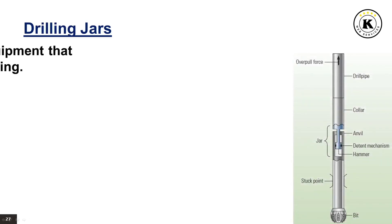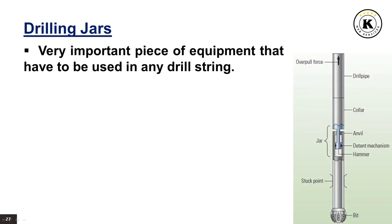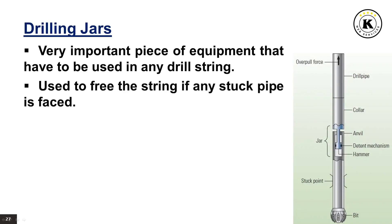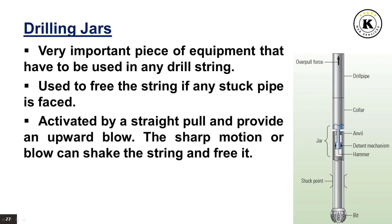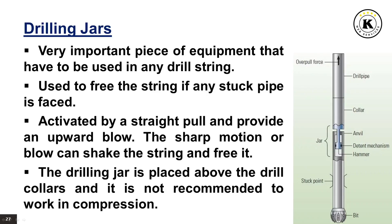Drilling jars are very important pieces of equipment that should be used in any drill string. They are used to free the string if stuck pipe is encountered. They are activated by a straight pull and provide an upward blow; the sharp motion can shake the string and free it. The drilling jar is placed above the drill collars and it is not recommended to work in compression.